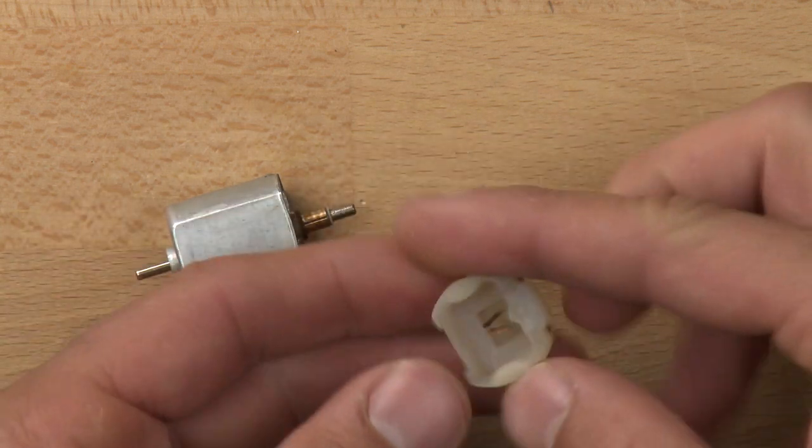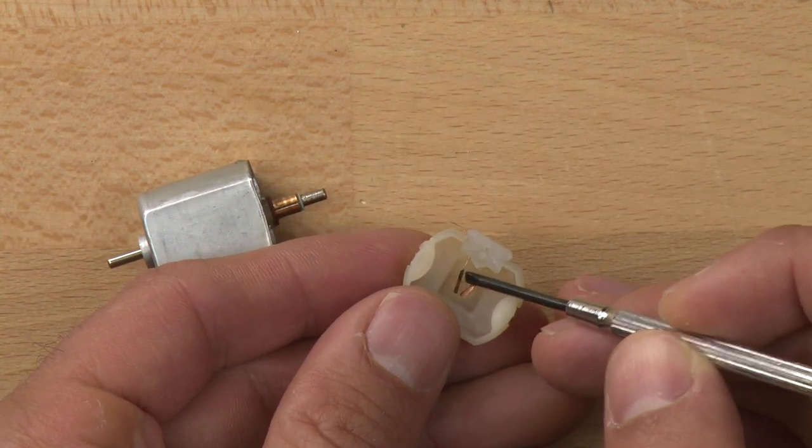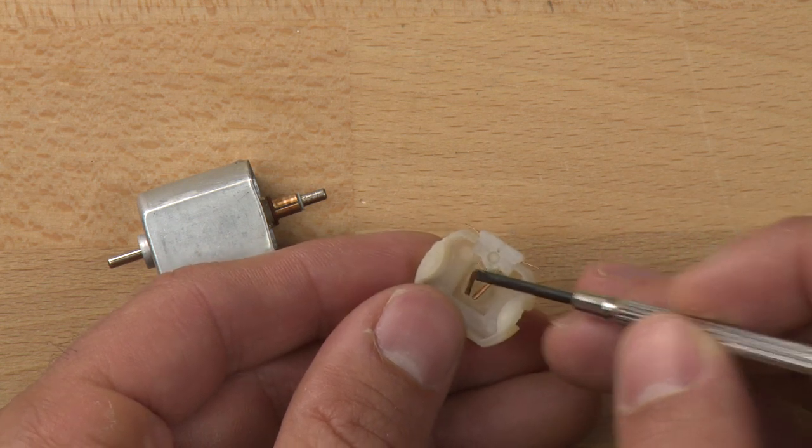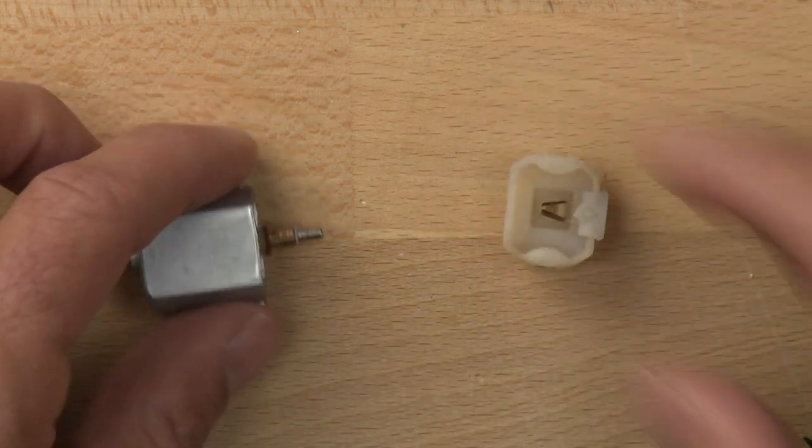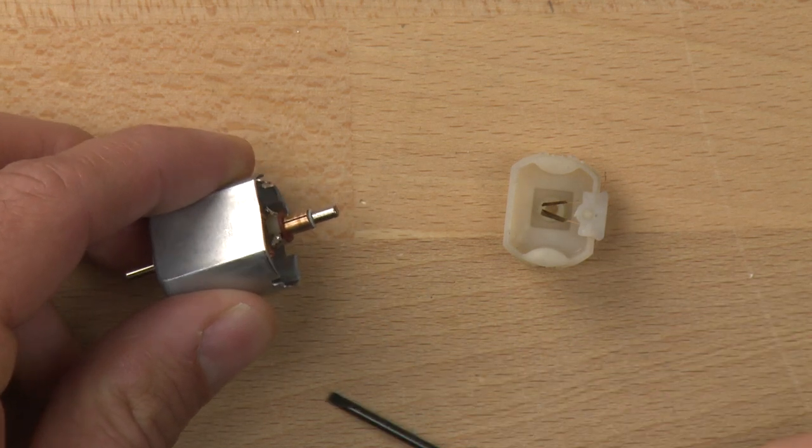So on the inside, the two tabs connect to these two pieces of metal here and those are called brushes. These are copper brushes and they brush up against and conduct the electricity down to this guy which is called the commutator.